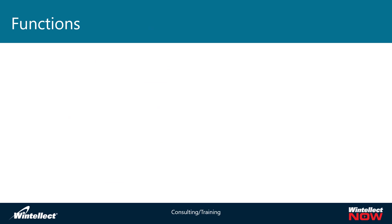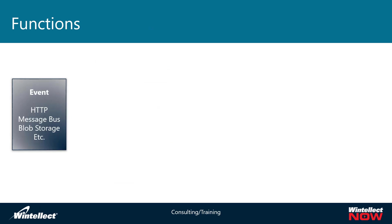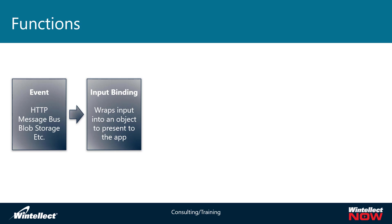The function flow looks like this. It starts with an event because functions are an event-driven model. That might be an HTTP request, some message getting put on a message bus, something happening in blob storage — there are a lot of different kinds of events that can happen. Now the event itself isn't part of the function; rather, the event binding is. So whenever an event happens, there's something watching that environment for that event to occur, and when it does, it wraps it up in an object presented to the app in the form of an event binding.